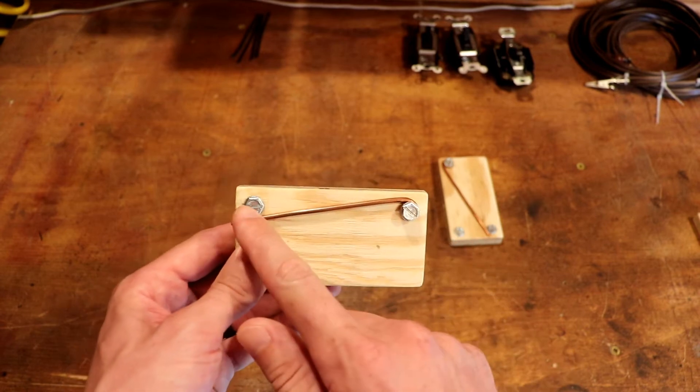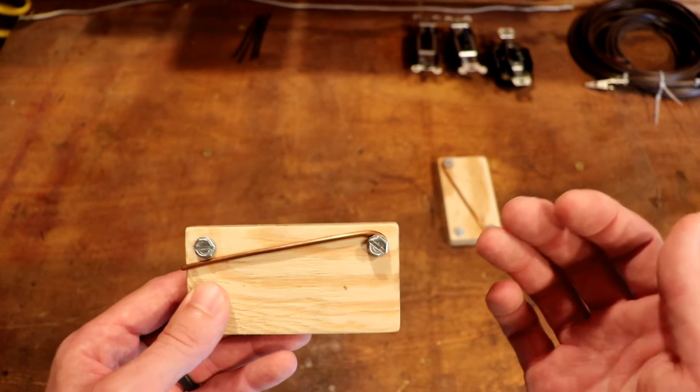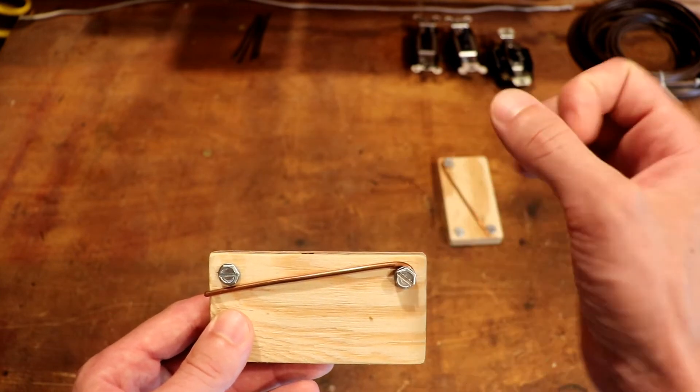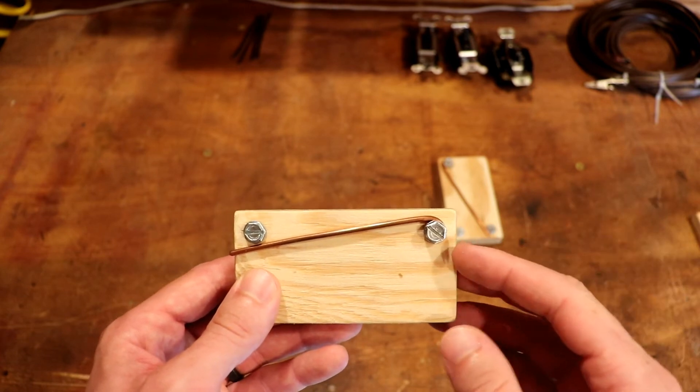We have two lugs on the switch that are visible from the outside and remember we're interrupting the hot only. The neutral is going to flow straight through or maybe be bundled together, likely a bunch of white wires. We're just interrupting the hot side of the circuit.